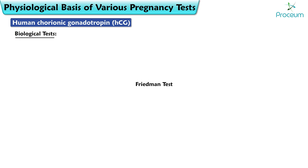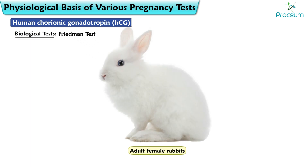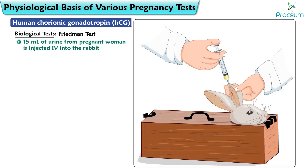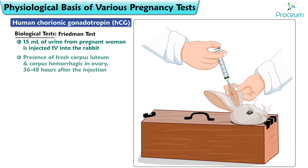Friedman Test: Adult female rabbits are used for this experiment. 15 milliliters of urine from the pregnant woman is injected intravenously into the rabbit. The presence of fresh corpus luteum and corpus hemorrhagicum in the ovary 36 to 48 hours after the injection indicates a positive result.